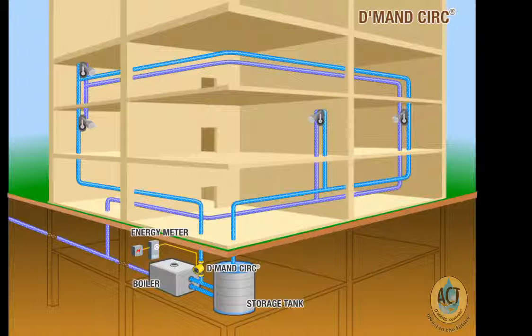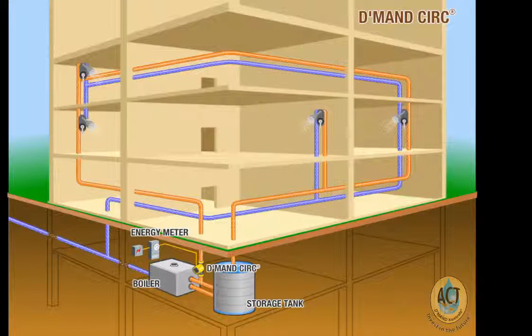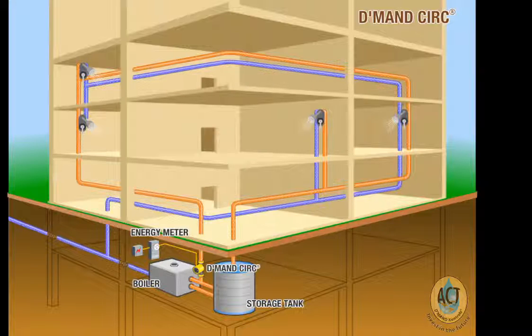The Demand CIRC uses sensors that monitor real-time hot water usage in the building as well as loop temperature. When the Demand CIRC detects a combination of hot water demand within the building and cooler ambient temperature water in the loop, it kicks on to deliver hot water throughout the building within seconds.